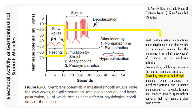Slow waves usually do not by themselves cause muscle contraction in most parts of the GI tract, except perhaps in the stomach. Instead, they mainly excite the appearance of intermittent spike potentials, and the spike potentials in turn actually excite muscle contraction.